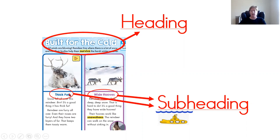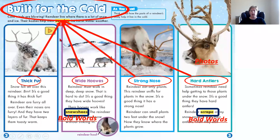The subheading tells you specific information about how the reindeer body is built for the cold. If we look at this page with the article opened up completely, you can see the heading 'Built for the Cold,' and there are four subheadings. 'Thick Fur' tells you all about the fur of the reindeer. 'Wide Hooves' tells you about how reindeer hooves work and how they're useful. 'Strong Nose' covers information about their nose. The last one is 'Hard Antlers,' giving you all the information about the reindeer's antlers — all the different ways their body is built for the cold.